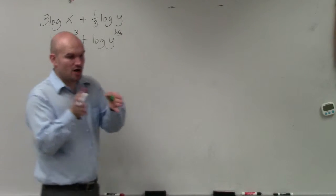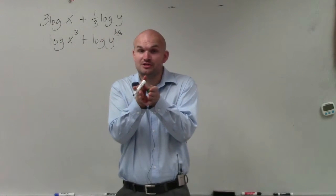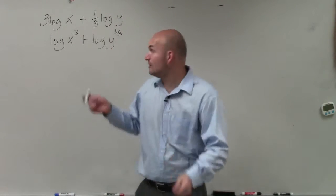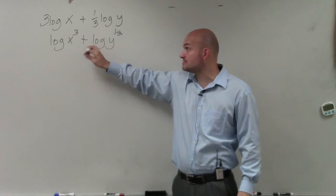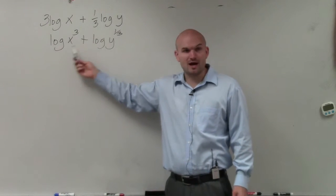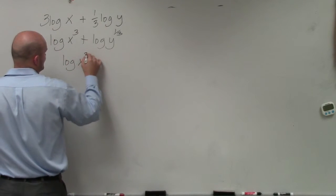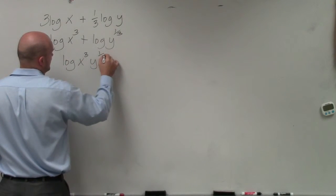Now remember, when we had a logarithm and they were separated by multiplication, we could separate that into two logarithms with the addition of two logarithms, right? So now if I see I have the addition of two logarithms, I can rewrite that as the product of our two values. So I can rewrite this as log of x cubed times y to the 1/3.